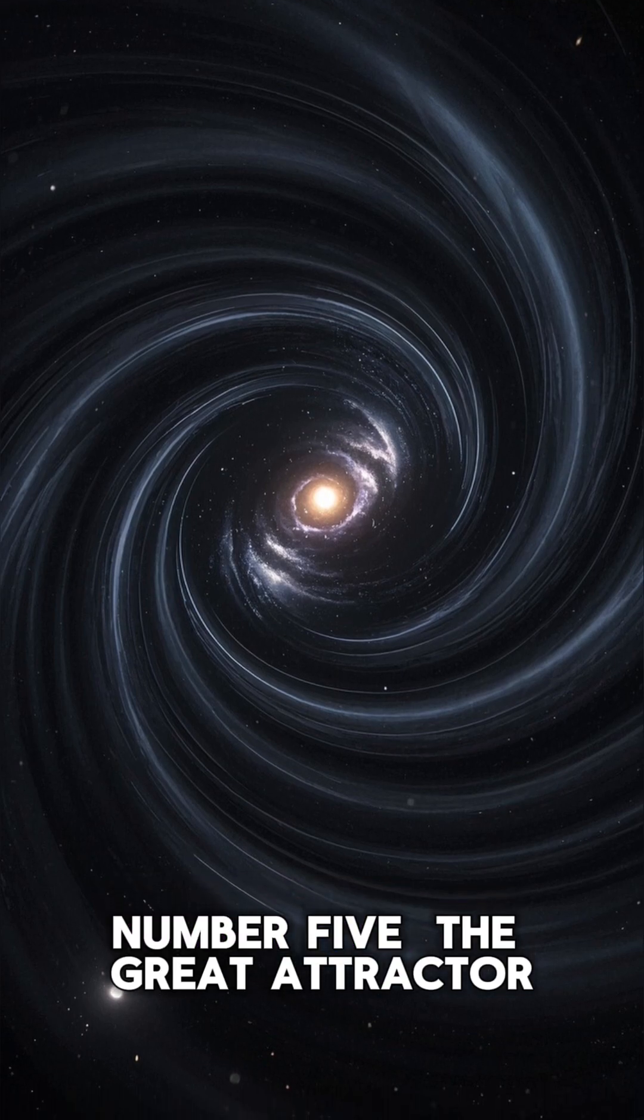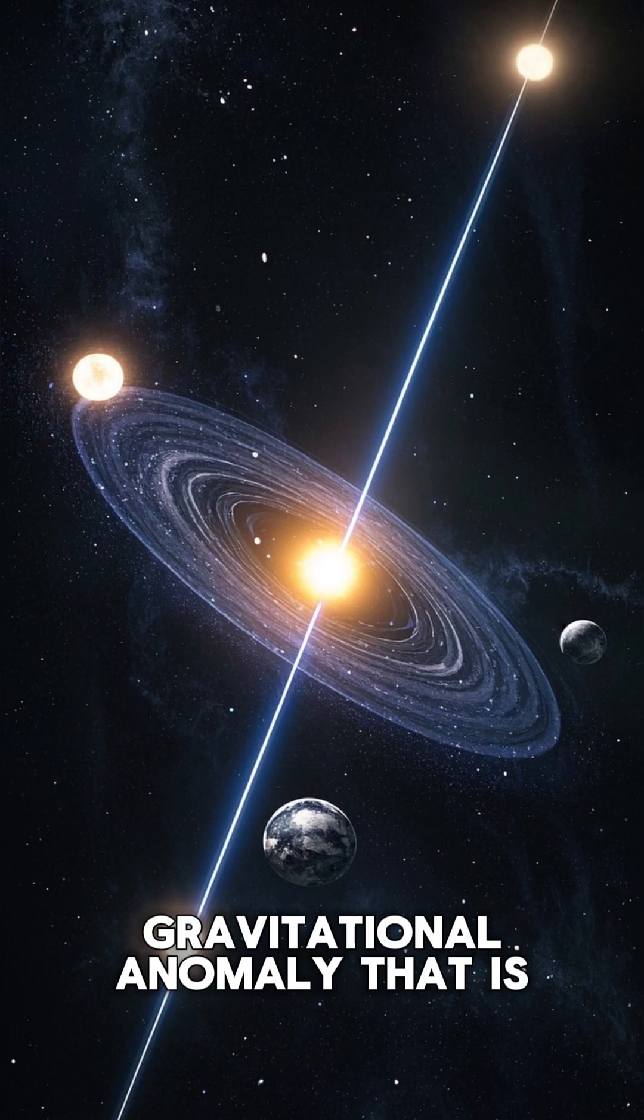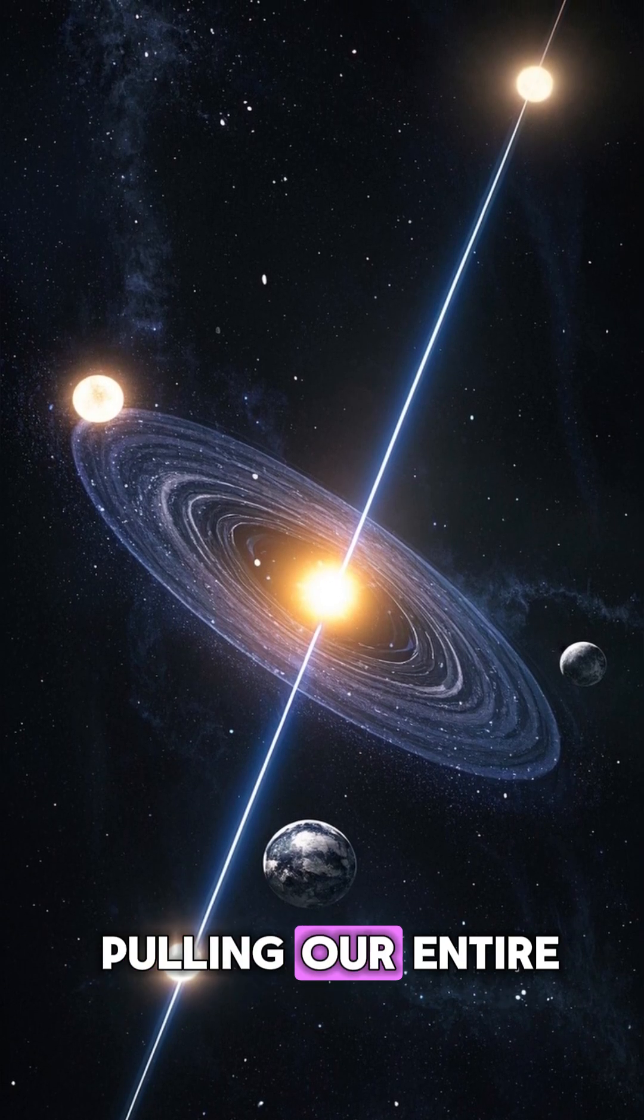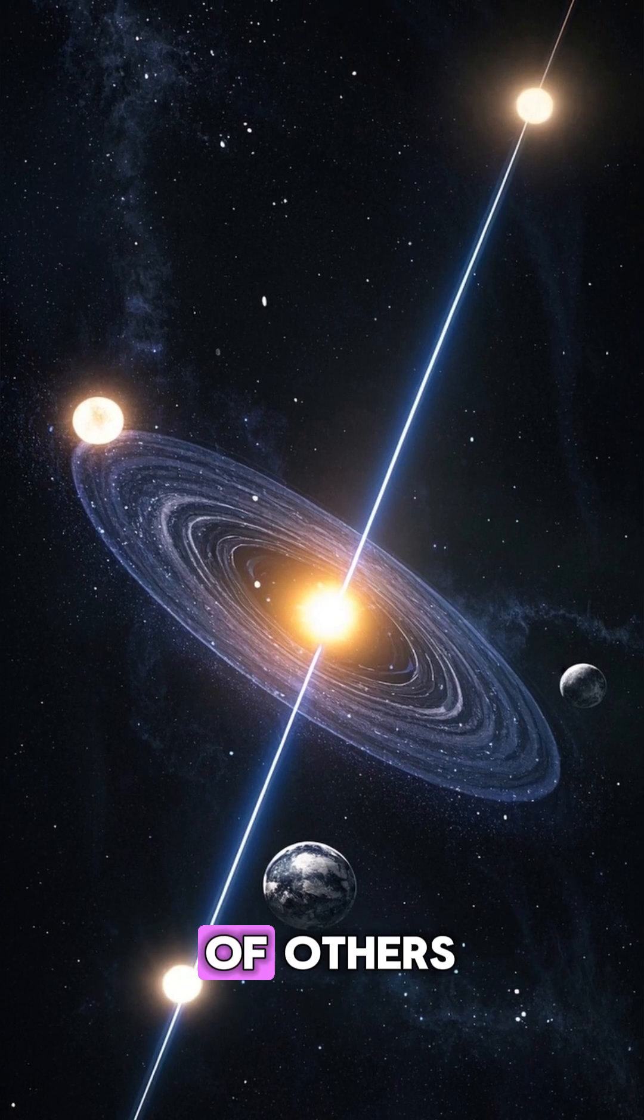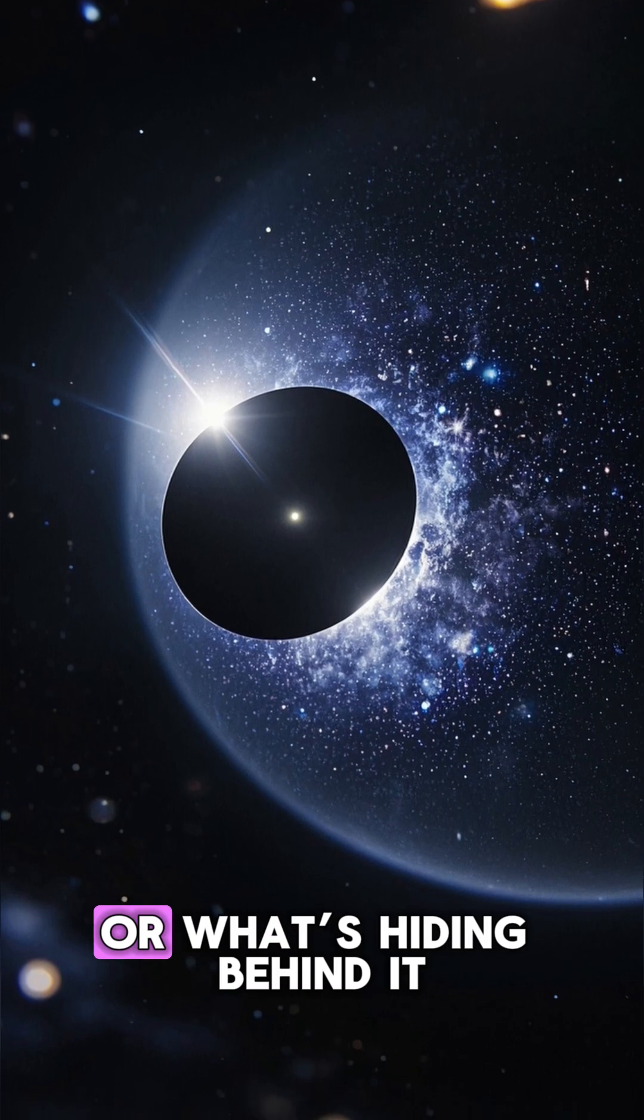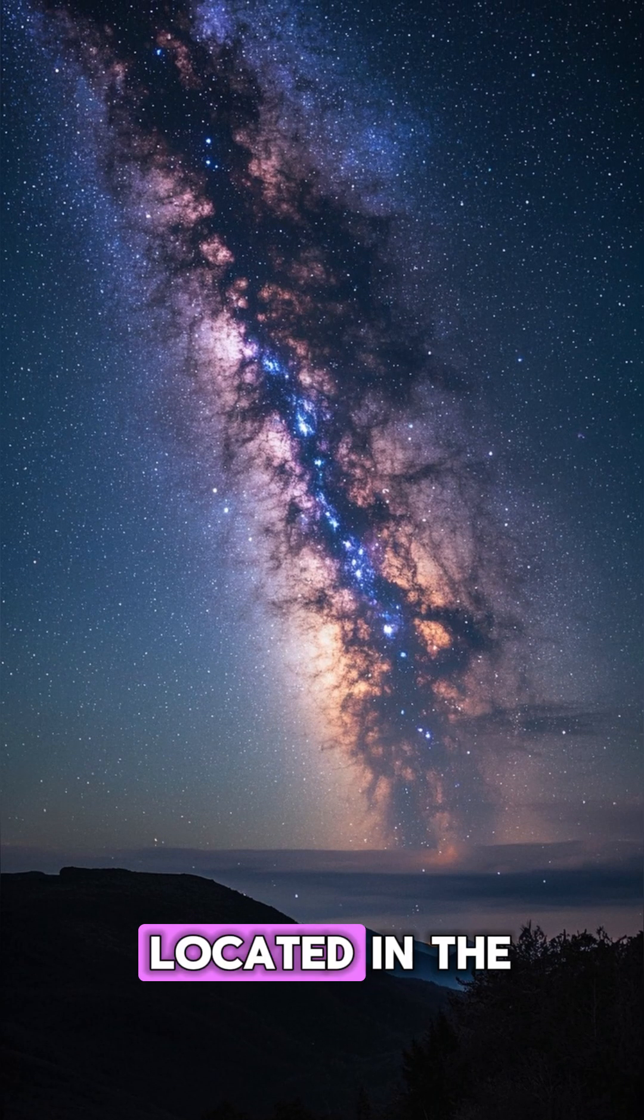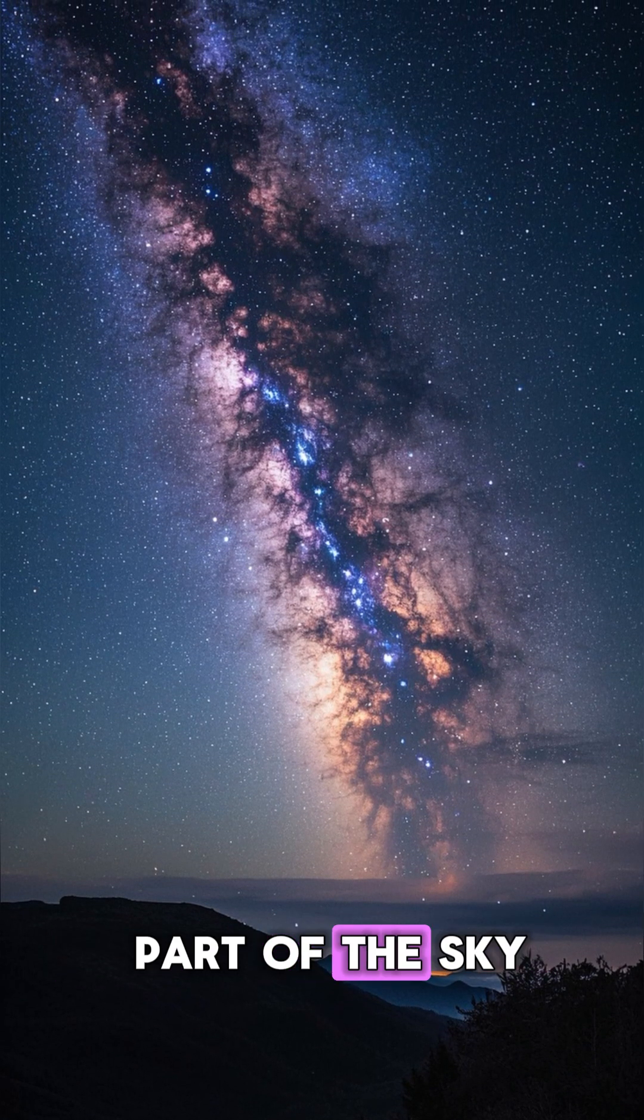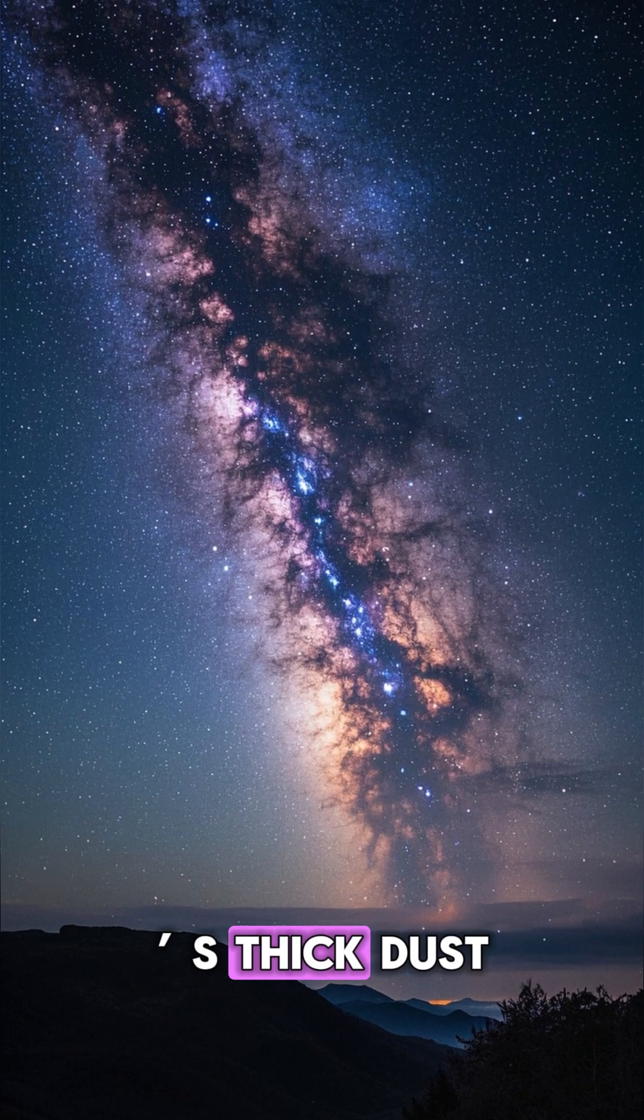And finally, number 5: The Great Attractor. This is a mysterious gravitational anomaly that is pulling our entire galaxy, along with millions of others, towards it at over 600 kilometers per second. We still have no idea what it is or what's hiding behind it, because it's located in the Zone of Avoidance, a part of the sky obscured by the Milky Way's thick dust and stars.